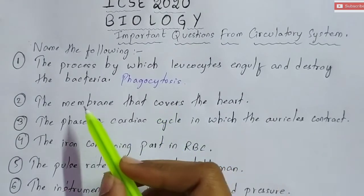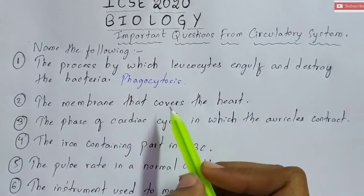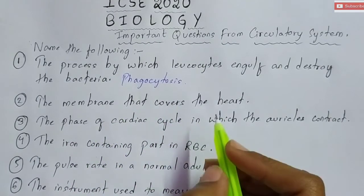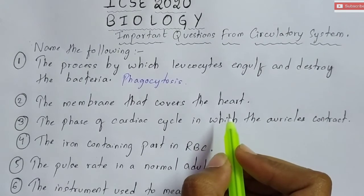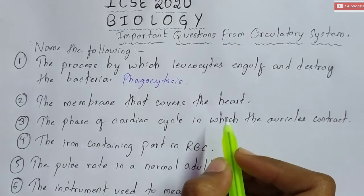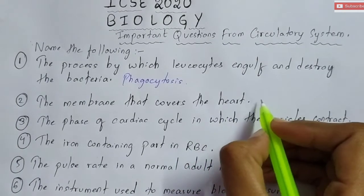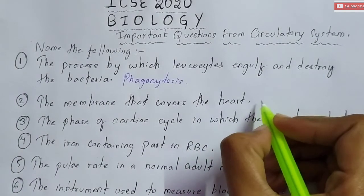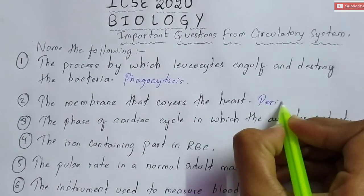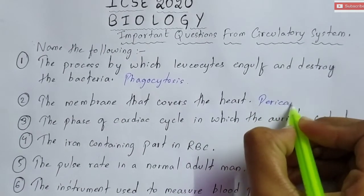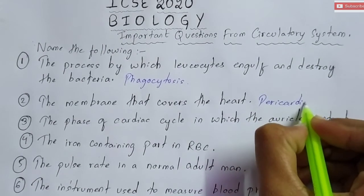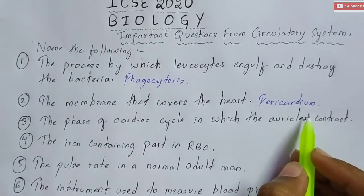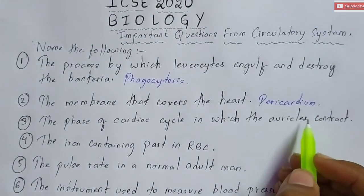The next question: the membrane that covers the heart. It is a double membrane structure, and it is known as pericardium. This is the protective covering of the heart and it is a double membrane structure.